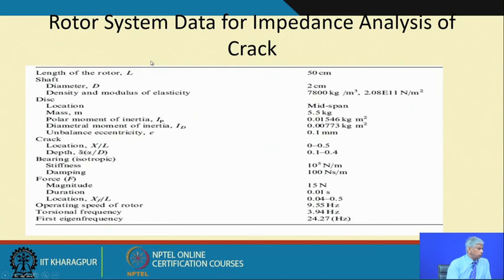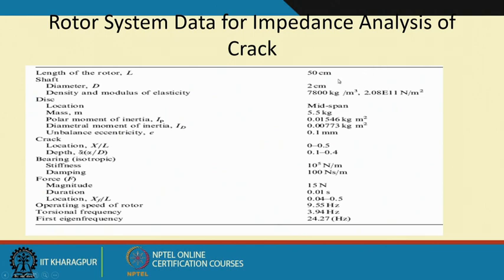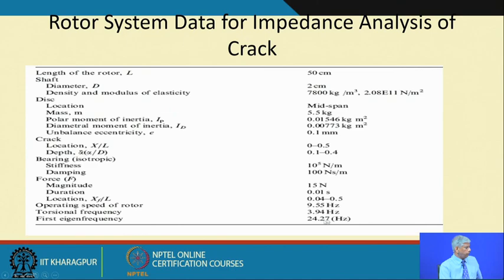For those doing research in this area, they can refer to our paper published in 2002 in the Journal of the Acoustical Society of America. In the laboratory we took a steel shaft of 2 cm diameter and 50 cm length, with a disc at mid-span. The crack location was varied, the crack depth ᾱ was varied, bearing stiffness was assumed constant, force was 15 N for a duration of 0.1 seconds, and we varied the operating speed to find eigenvalues and eigenfrequencies.